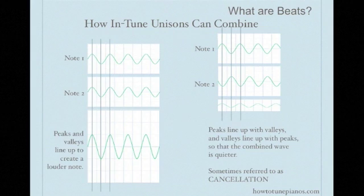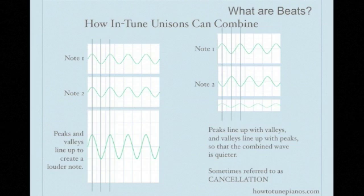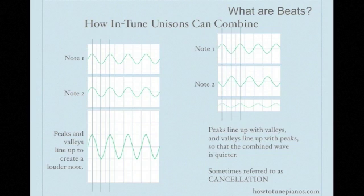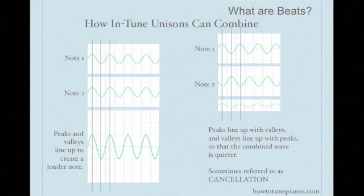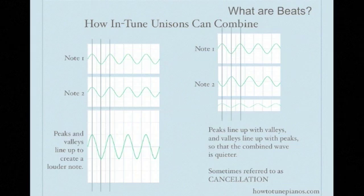Before that slide, I'm showing you graphically what's happening. On the left, you see the two notes where their peaks line up, and the resultant below those two graphs is the same graph with larger peaks and valleys. Whereas on the right, note 1's peak lines up with note 2's valley. So when you add them together, they cancel out, and the result is a smaller wave — the same frequency, but much less amplitude, in other words, quieter. This is sometimes referred to as noise cancellation.